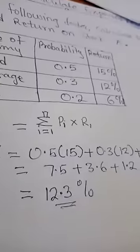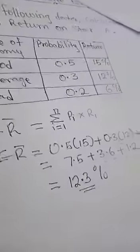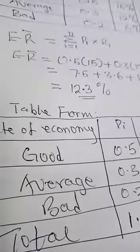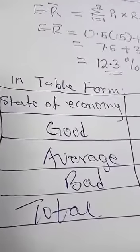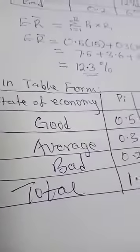If you want, you could put this in a simple table like this. If you decide to put it in a table form, you have your state of the economy: good, average, and bad.